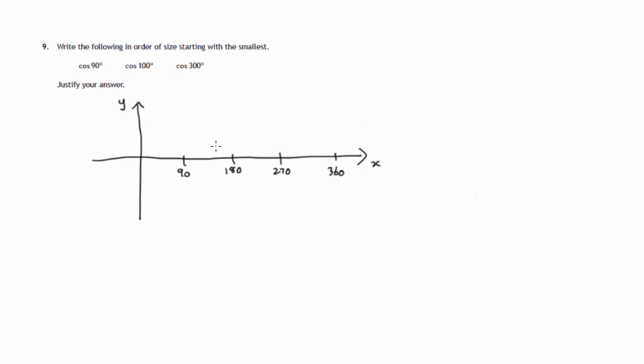The y-axis will give our values of the cosine, and they range from 1 to negative 1. And the cosine values start off at cos 0 degrees, start off at 1. They go down to 0, cos 90 is 0.